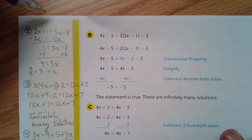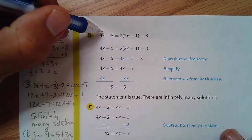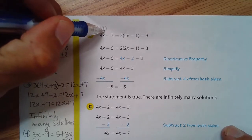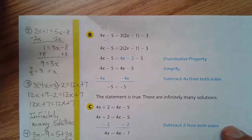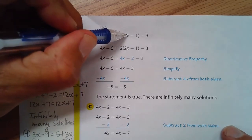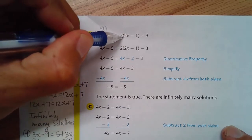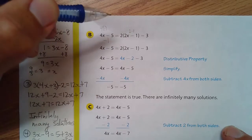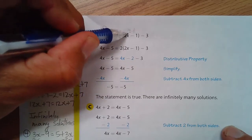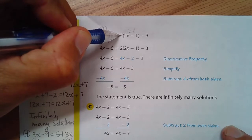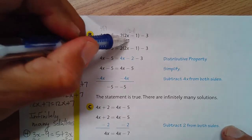So what it's saying is, let's say I put the number 1 in here. 4 times 1 is 4. 4 minus 5 is negative 1. So on that side, I get negative 1. 1. So 2 times 1 is 2. So it's 2 minus 1, which is 1. I have to multiply that by 2. So 1 times 2 is 2. And then 2 minus 3 is negative 1. On this side, I get negative 1 as well.